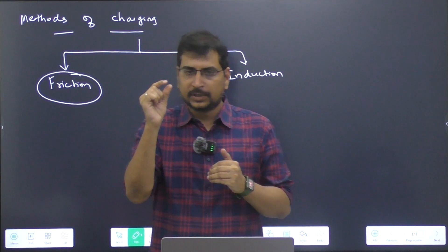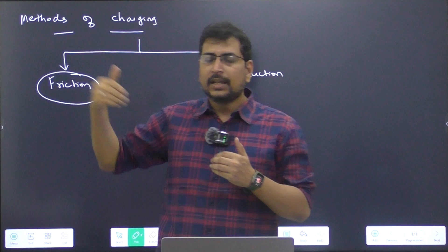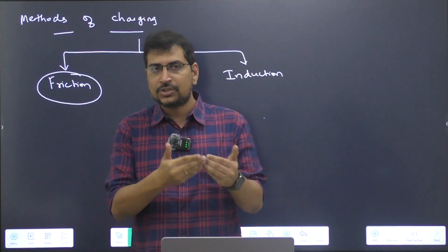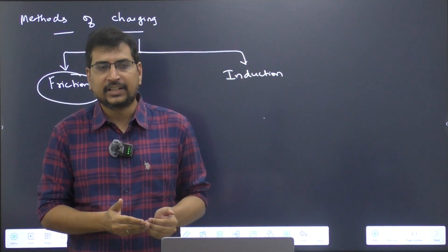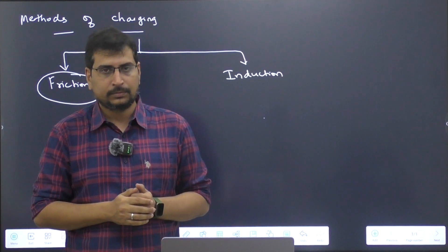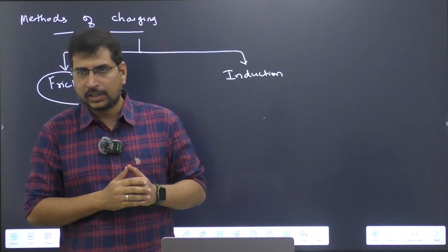For that electron which is present in the outermost orbit, if I am able to supply some sufficient amount of energy, then I can always make it escape from the surface. Are you able to understand what I am trying to say?